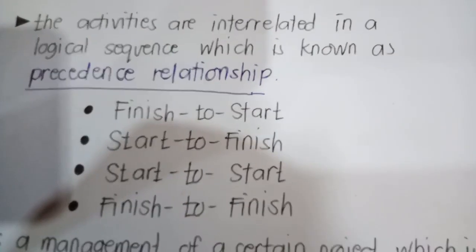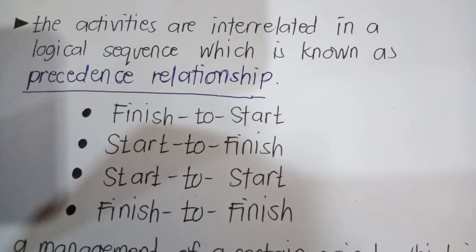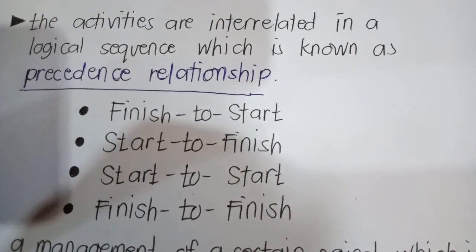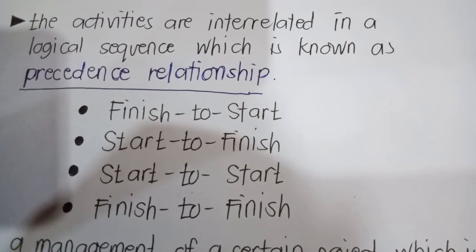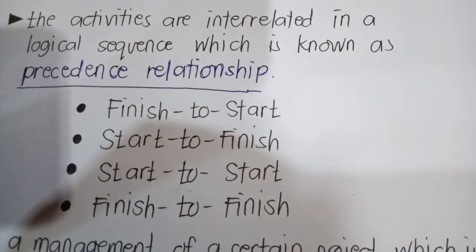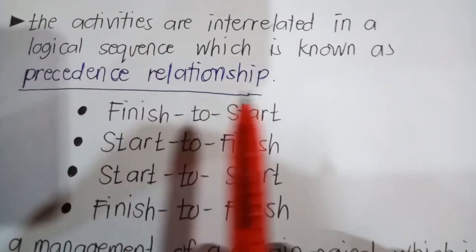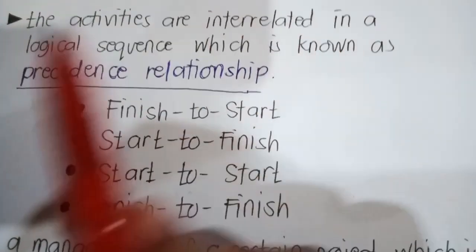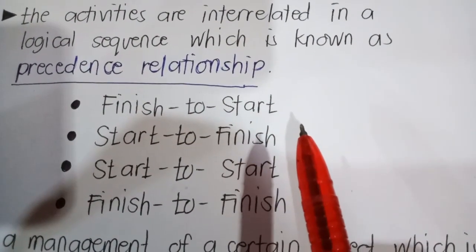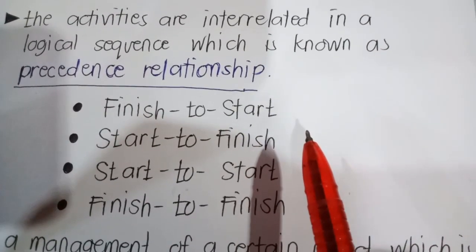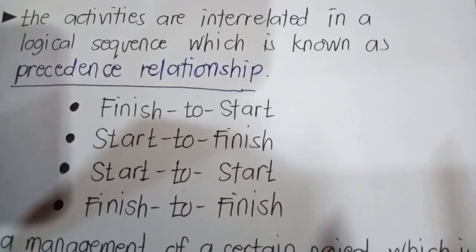For example, activity A is 'create the project charter,' and activity B is 'obtain the project charter approval from the project sponsor.' This finish-to-start relationship says that we must create the project charter first before we obtain project charter approval from the project sponsor.